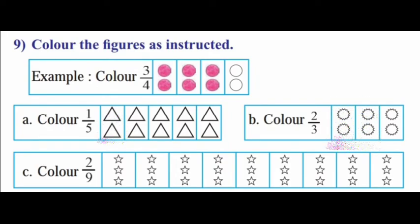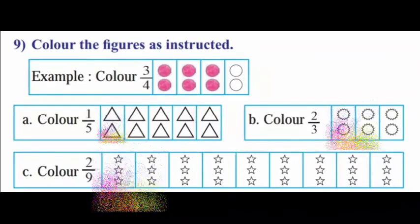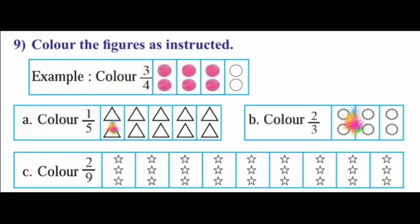Color 2 by 9. So stars are divided into 9 parts. In 2 rows, you should color 6 stars. Ok.